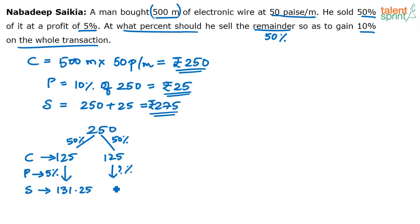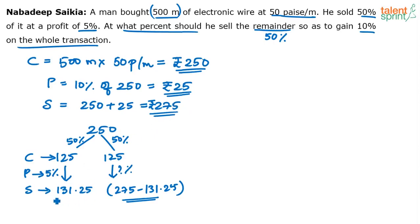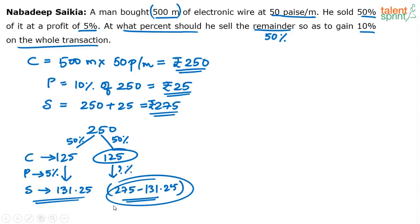What should be the selling price for the second half? The selling price here should be the total selling price of 275 minus 131.25. Of the 275 I need to earn, I have already received 131.25 from the first half of the transaction. In the second half, I should get 275 minus 131.25. So now I know the cost price and selling price of the second half, and I can find the profit percentage.